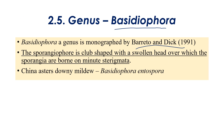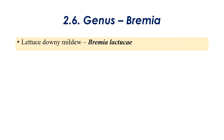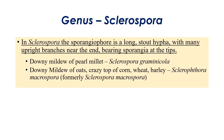The next genus is Basidiophora, monographed by Barrento and Dick in 1991. Basidiophora is characterized by the production of a club-shaped, swollen head on the sporangiophore. Best example: Chaenanthus downy mildew caused by Basidiophora entospora. The next genus is Bremia, which causes lettuce downy mildew. The tip of branches in Bremia are cup-shaped with four sterigmata — that is its distinguishing feature.